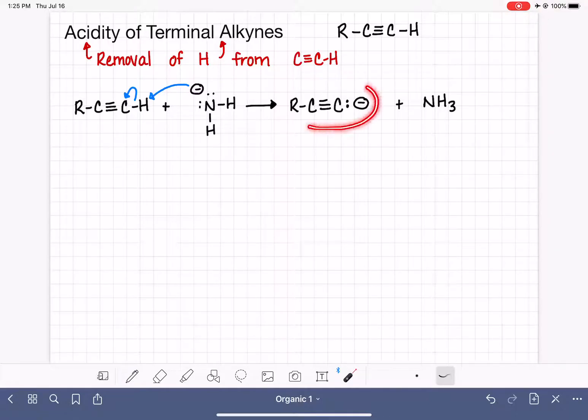So this carbanion obviously is not what we would call stable. It's a very strong base. But it's relatively stable because, we've talked about this before, the SP hybridization of that carbon is a small, short, stubby orbital that holds that formal negative charge close to the nucleus, which is positively charged. And this is what leads to its stability.